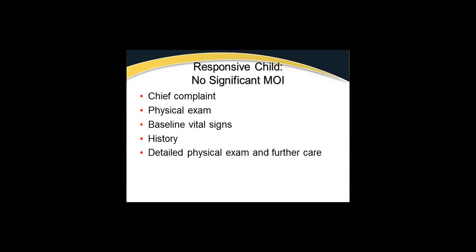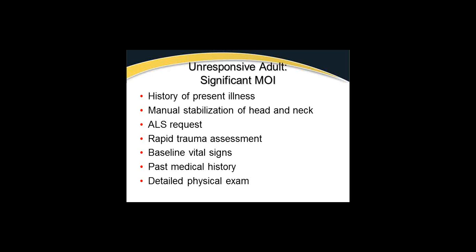Comparing assessments: for a responsive patient with no significant mechanism of injury, focus on the chief complaint, get the physical exam, baseline vital signs, a history, involve family when necessary, and do a detailed physical exam with further care as needed. For an unresponsive adult with significant mechanism of injury: get the history of present illness - which can be difficult with an unwitnessed event - manual stabilization of head and neck, request ALS, rapid trauma assessment, baseline vital signs, past medical history from clues or family members, and a detailed physical exam as time allows.